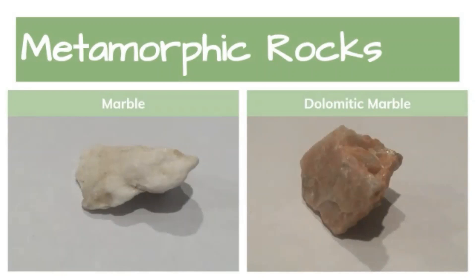Next we have two different kinds of marble — regular marble and dolomitic marble. Marble forms when limestone is subjected to the heat and pressure of metamorphosis. It occurs in large deposits hundreds of feet thick, is usually light in color and easy to carve, and is used in highways, railroad beds, building foundations, monuments, sculptures, and paving. Dolomitic marble is found in sedimentary rocks and is often white, gray, or pink in color. Dolomite, similar to limestone, metamorphosed from heat and pressure.